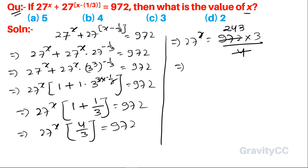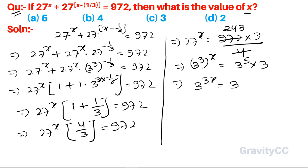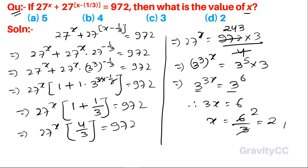Since 27 is 3 to the power 3, we have 3 to the power 3x equals 243, which is 3 to the power 5 — wait, 729 is 3 to the power 6. So 3 to the power 3x equals 3 to the power 6. Since the bases are identical, 3x equals 6, so x equals 2. Therefore option D is the correct answer.